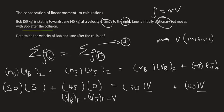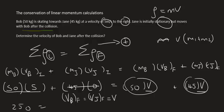What we end up with now is just a simple equation. We know that 45 times 0 is just 0. 50 times 5 is 250. And then 50V plus 45V is going to equal 95V. So if we divide by 95, we're going to end up with V is equal to 2.63 meters per second. And because we got a positive answer, we can say to the right.